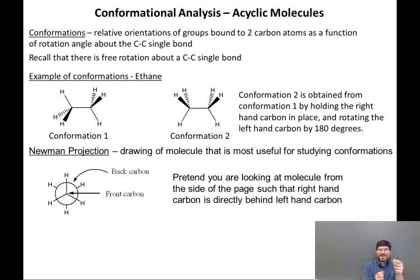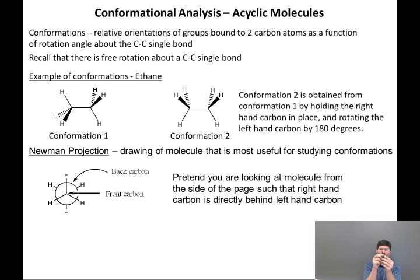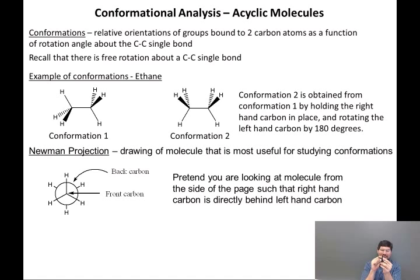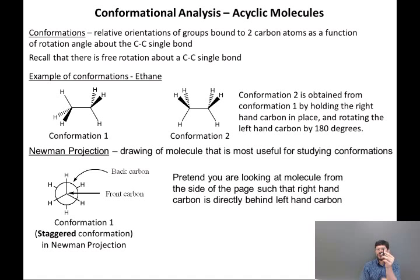When we actually draw it on a piece of paper, the back carbon gets a circle and the front carbon gets a dot at the center of the circle. Looking at conformation one in a Newman projection: on the front carbon, the one closer to you, there's a hydrogen pointing up, down and to the left, and down and to the right. On the back carbon, the one closer to me, there's a hydrogen pointing straight down, back and to the left, and back and to the right. This conformation, because the six hydrogens are as far apart from each other as they possibly can be, is called the staggered conformation.